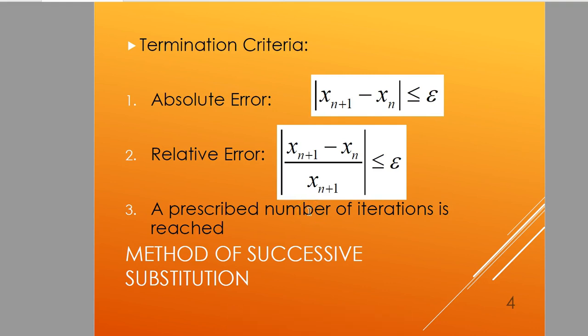How do you know when to stop applying the method of successive substitution? First is the absolute error, where the absolute value of the difference is less than the prescribed error e. Relative error: when you divide them and it's less than the required e, you can terminate.